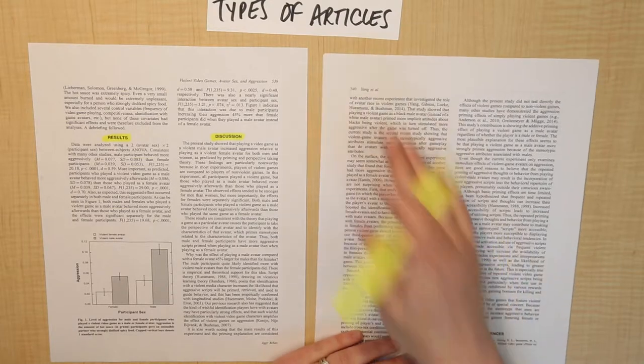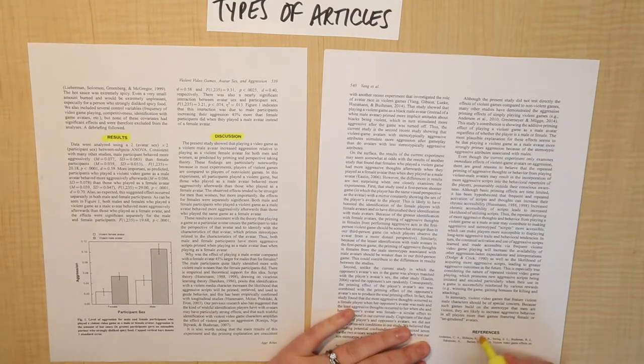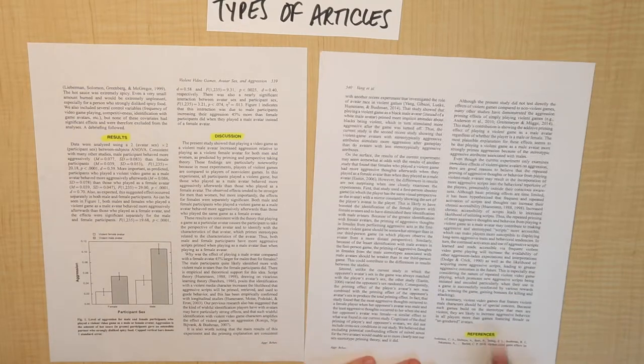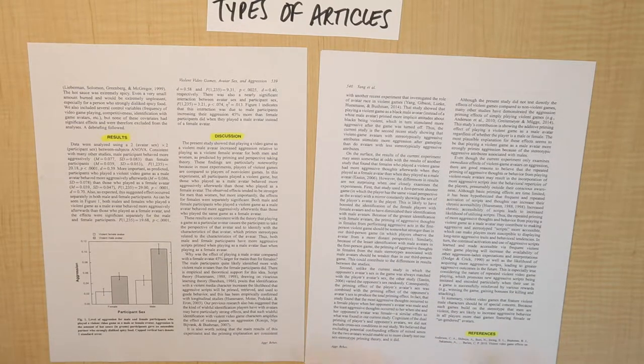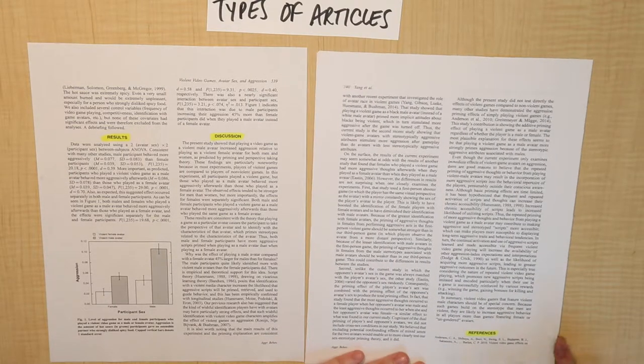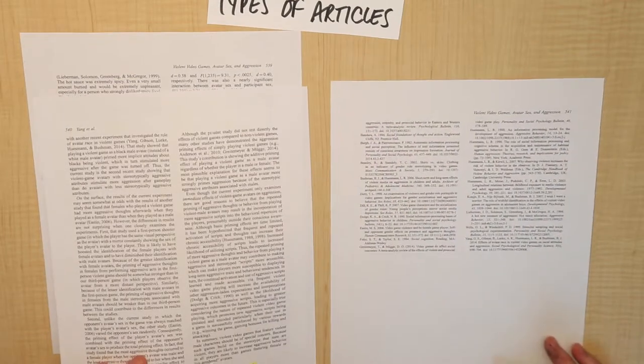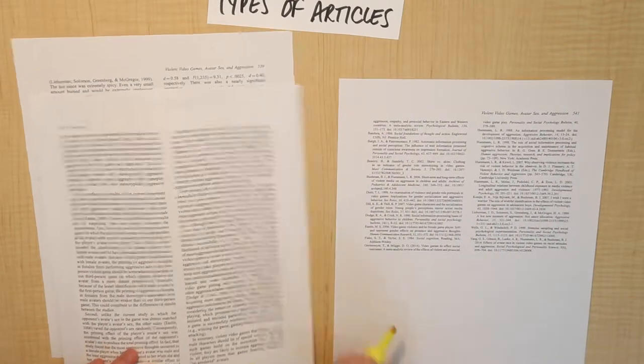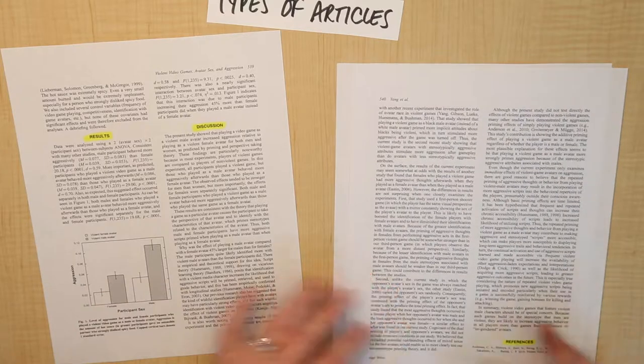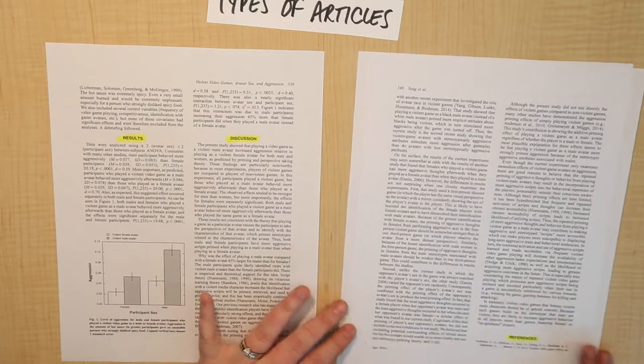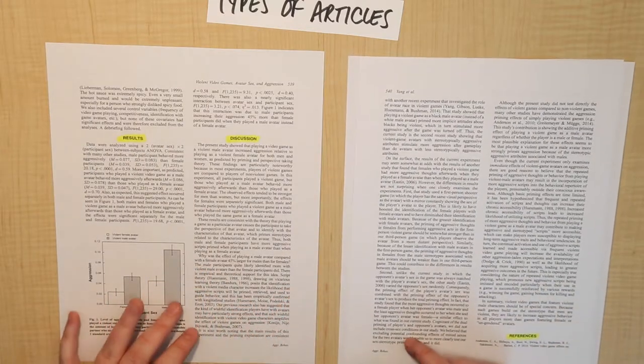And with any of these peer-reviewed articles, they're of course also going to always have this section called References. So I think that this is obviously one of the signs that something is a peer-reviewed journal article. But it's not unique to empirical studies. It'll be in most of the different kinds.